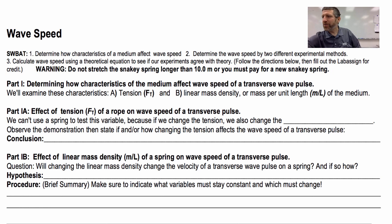Let's go ahead and get started. We're going to determine how characteristics of the medium affect the wave speed of a transverse wave pulse. The characteristics we're going to examine are tension—here's our spring tension right here, right now this tension is 10 Newtons—and also how the linear mass density affects it. Linear mass density, what the heck is that? That is the mass per unit length of the medium.